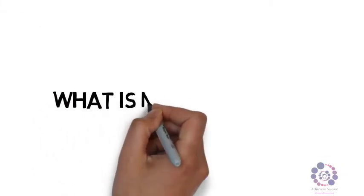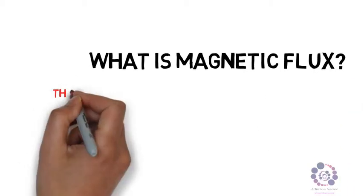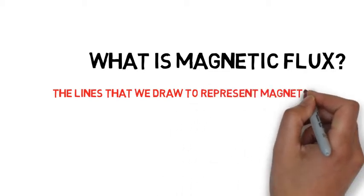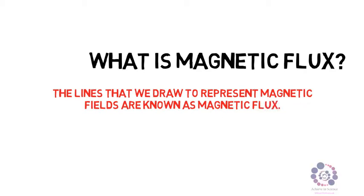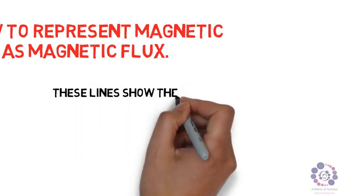Well, the lines that you draw around a magnet to show the magnetic field are known as Magnetic Flux. Now these lines that you draw show the direction of the force upon a North Pole.